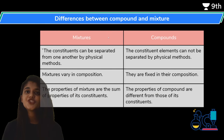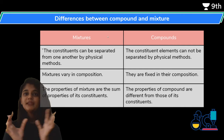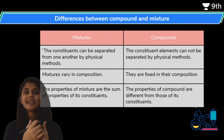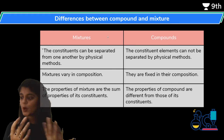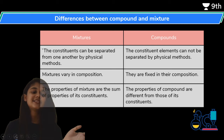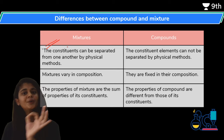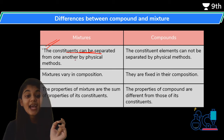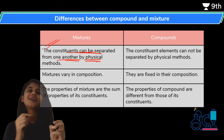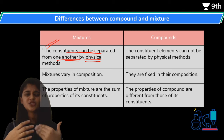Now let's look at an important differentiation. We have seen mixtures and also compounds under pure substances, so you might have a doubt: what is the difference between compound and mixture? Compound comes under pure substance and mixture comes under impure substance. There are three major differences between mixtures and compounds. The first difference: mixture can be separated by physical methods. The constituents of a mixture - which can be two or more - can all be separated by physical methods.